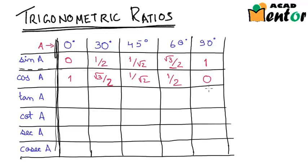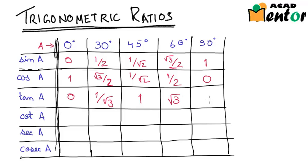Now once we have sin A and cos A, we can find out the value of tan A, because tan A is sin A by cos A. Hence this row would be nothing but the ratio of the first row and the second row. Tan 0 degrees was 0, tan 30 degrees would be 1/√3, tan 45 degrees is 1, tan 60 degrees is √3, and finally tan 90 degrees will not be defined because anything divided by 0 is not defined.